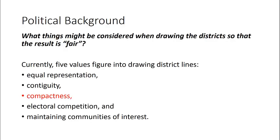We said that currently there are five values that figure into drawing district lines: equal representation, so having roughly the same number of people in each district; contiguity, which says that our districts must be connected; something called compactness, which means that our districts shouldn't be too stretched out or have too jagged of a boundary; electoral competition among political parties; and maintaining communities of interest.